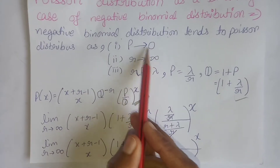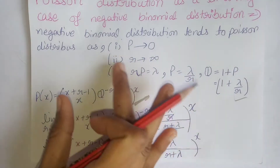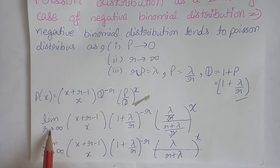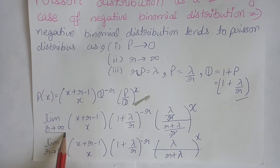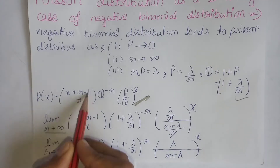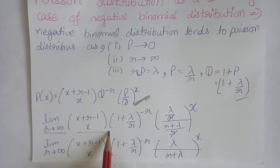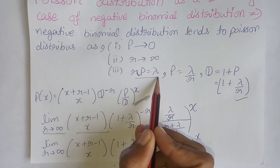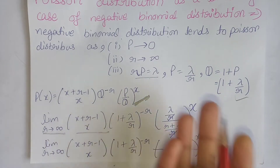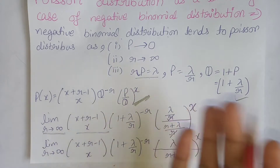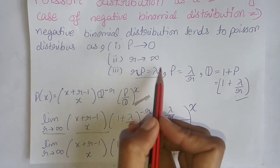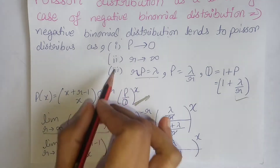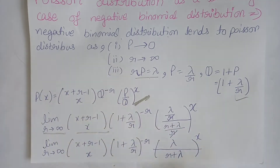First, capital P approaches 0 — we cannot do anything with that directly. The second condition is small r approaches to infinity, meaning we apply the limit as r goes to infinity. The third condition is small r multiplied by capital P equals lambda. We can apply this by expressing capital P and capital Q values in terms of lambda and substituting them into the expression.